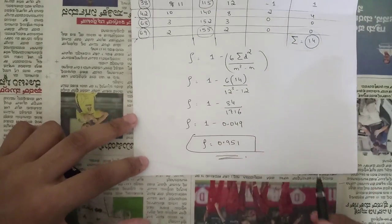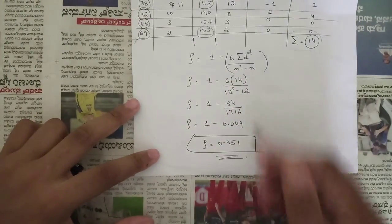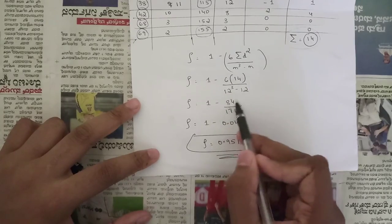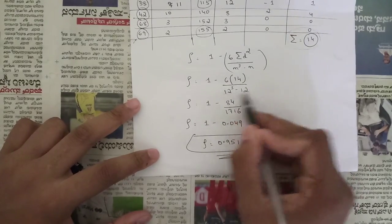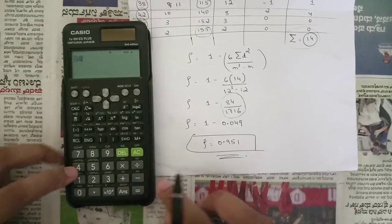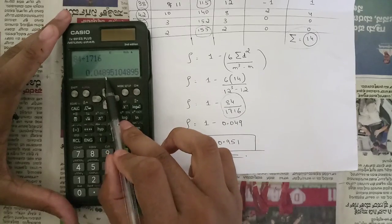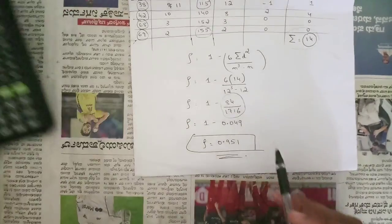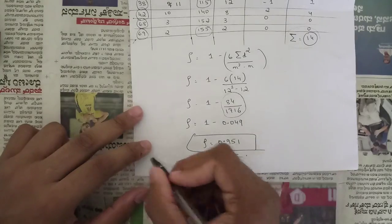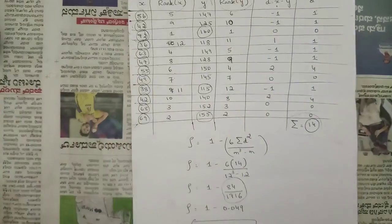Substitute into the rank correlation formula: r = 1 − (6 × summation d²) / (n³ − n), where summation d² = 14 and n = 12. So r = 1 − (6 × 14) / (12³ − 12) = 1 − 84/1716 = 1 − 0.049 = 0.951. This is the final rank correlation. These were all the problems on rank correlation.